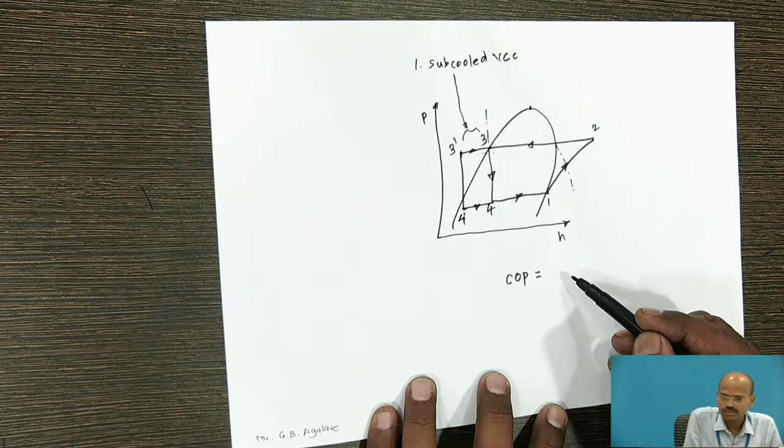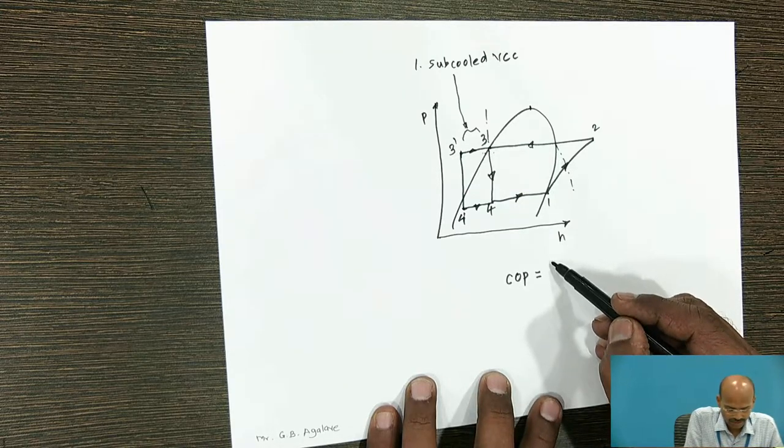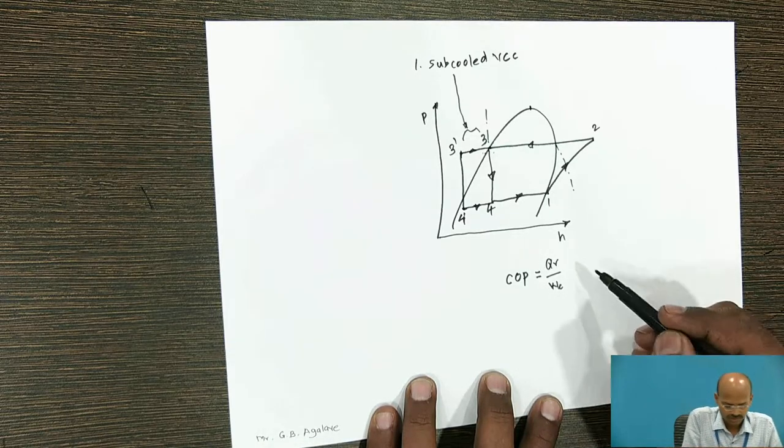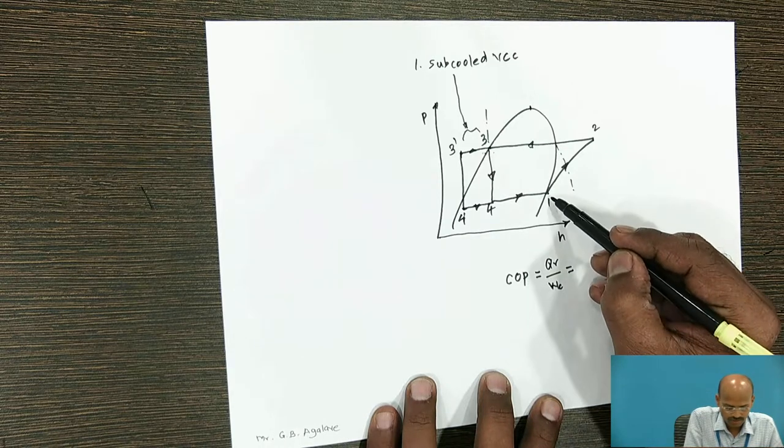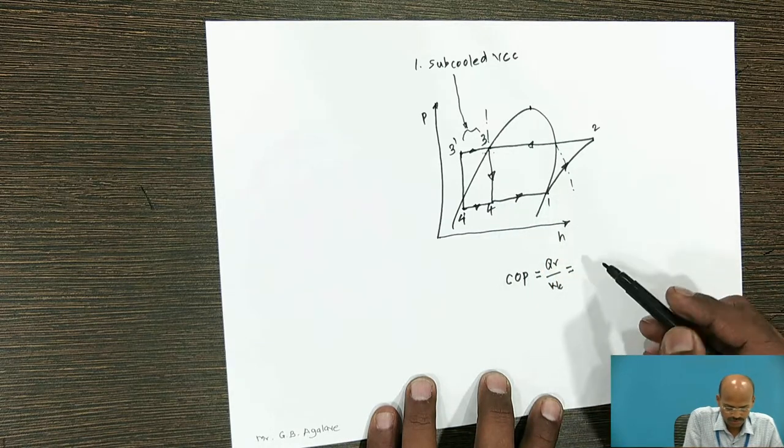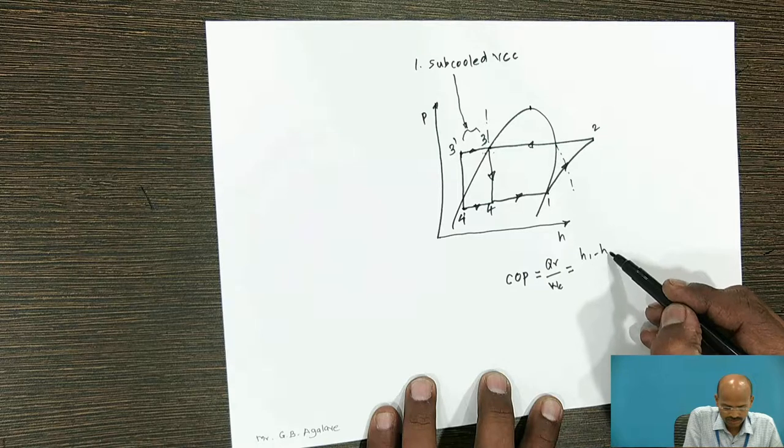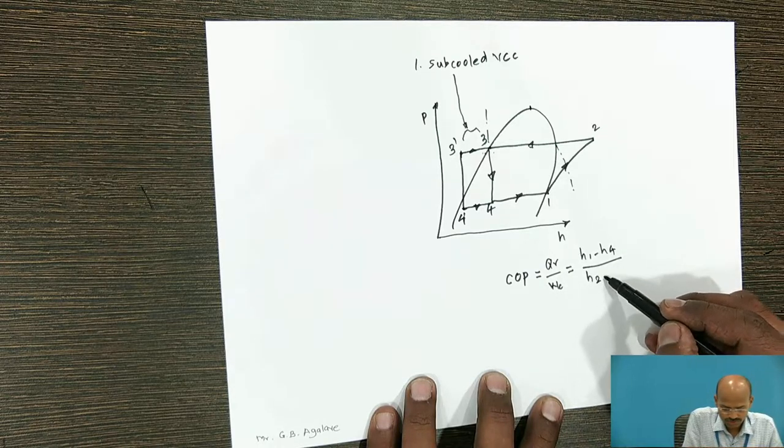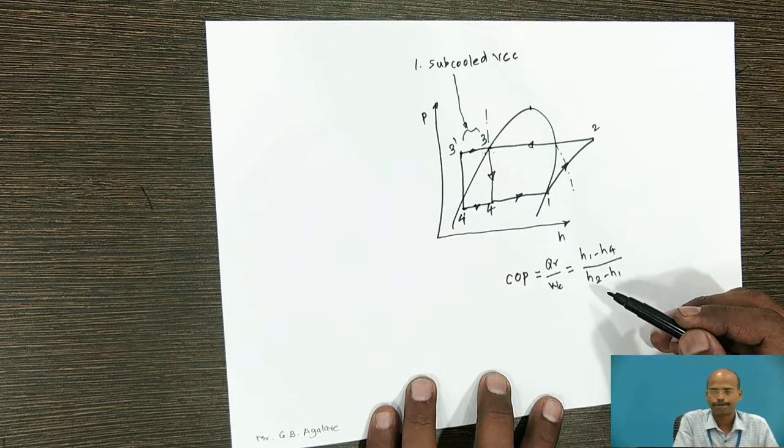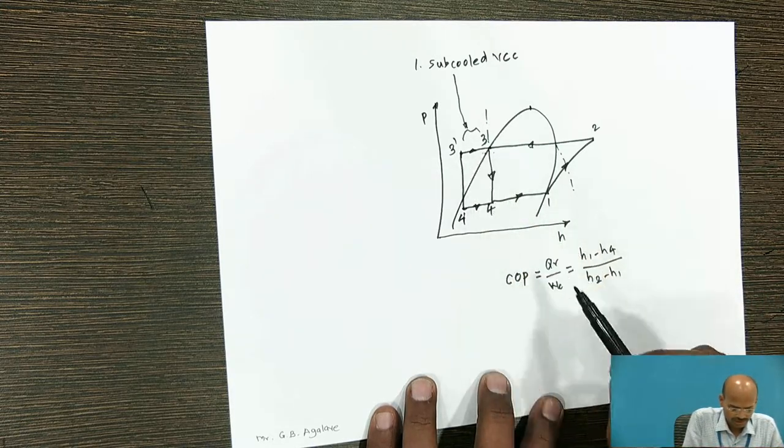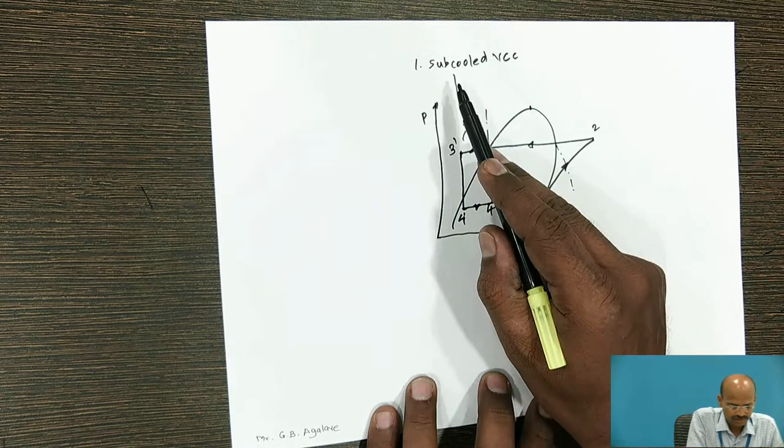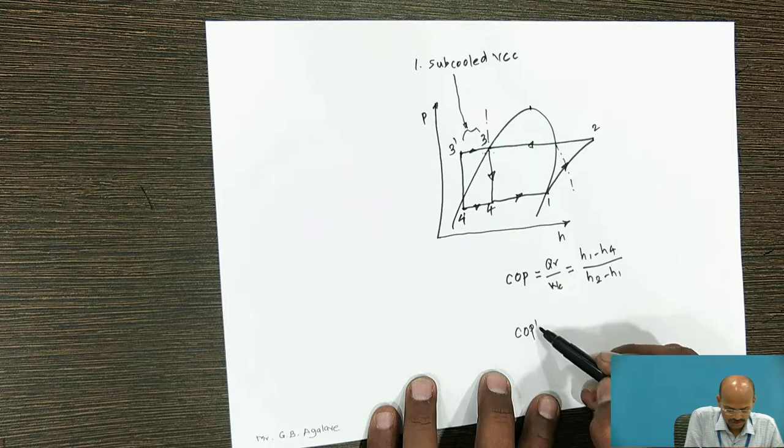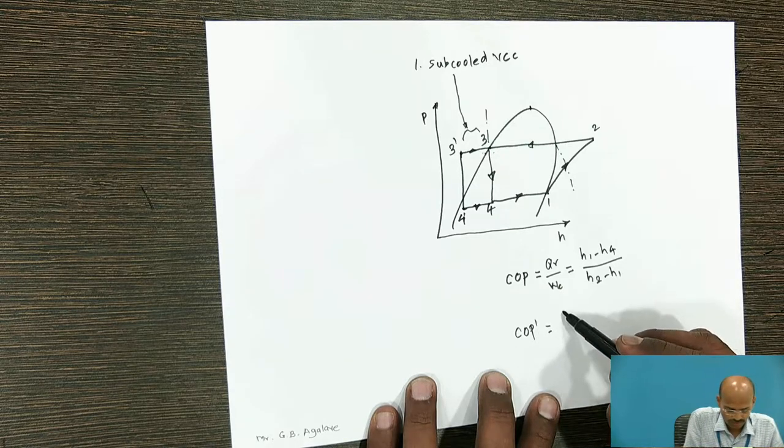For theoretical COP we had written refrigerating effect divided by work consumption. So refrigerating effect was during process 4 to 1, so H1 minus H4 divided by work consumption was H2 minus H1. By getting the subcooled refrigerant, that means for subcooled VCC, suppose the notation is COP will be equal to QR divided by WC dash.